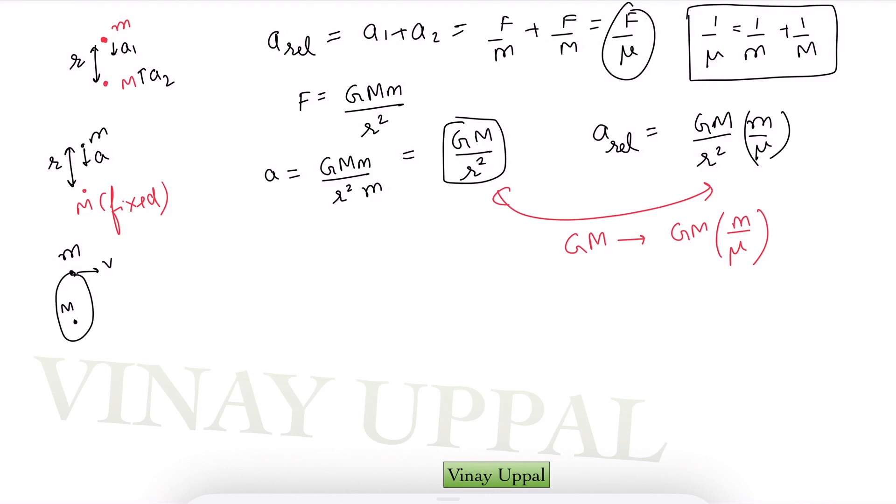As I reduce the speed the ellipse will grow smaller and smaller and eventually as v tends to zero the ellipse is going to flatten up into almost a straight line into a pair of straight lines. You can see that as v tends to zero the semi minor axis of the ellipse is going to also tend to zero.